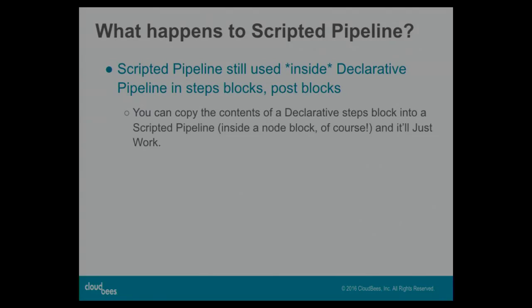It's not a different thing — it's still the same execution engine, just a different way to use that execution engine. Scripted pipeline is still used inside declarative pipeline; all of your step invocations are still there. There are escape hatches where you can use the full set of scripted pipeline syntax without validation. You can copy your steps from a declarative stage into a scripted pipeline and they'll work just fine. Declarative isn't meant to cover every use case scripted pipeline does — it covers the standard, predictable, consistent ones. When you need more complex logic, that's when you move to scripted.